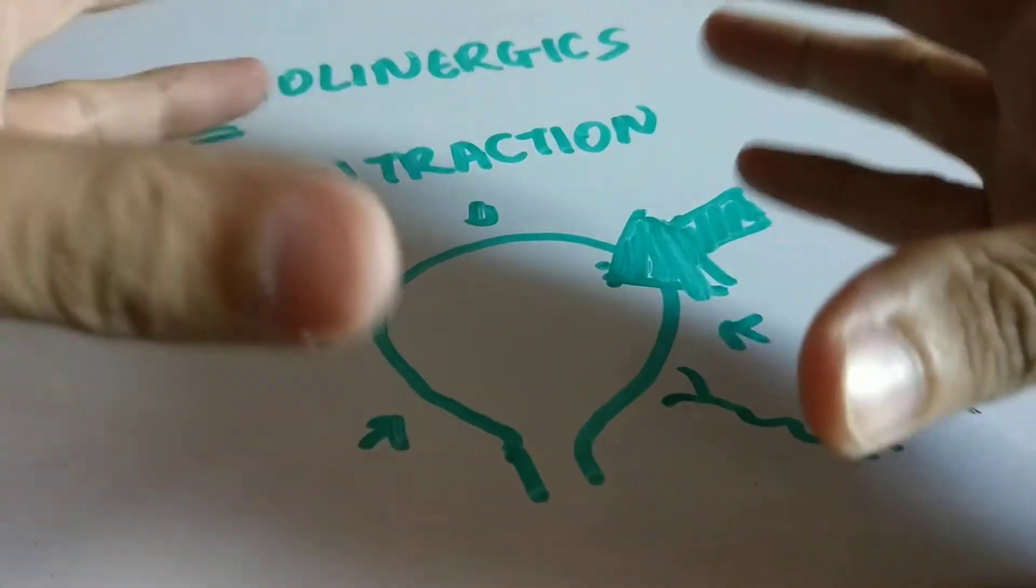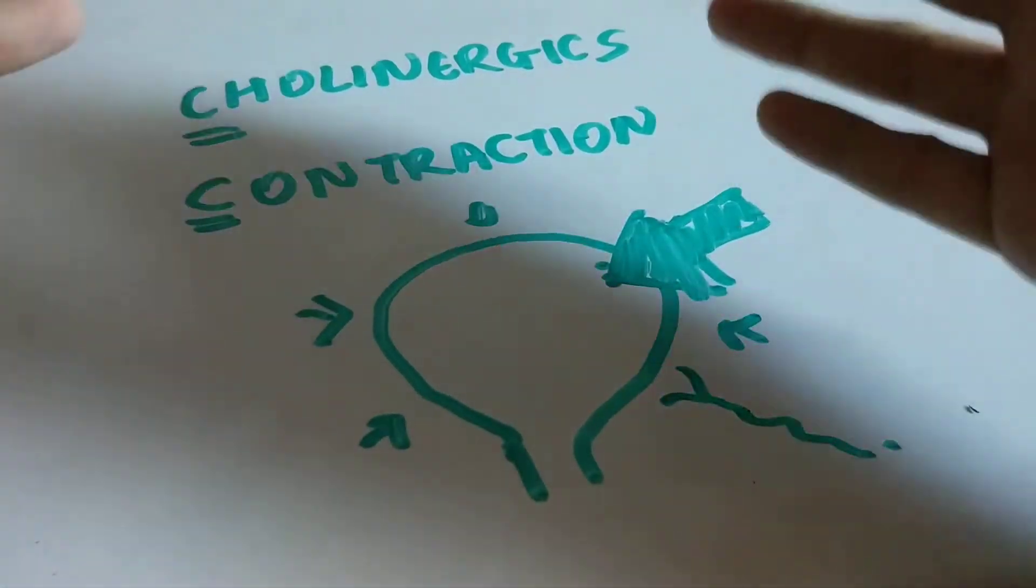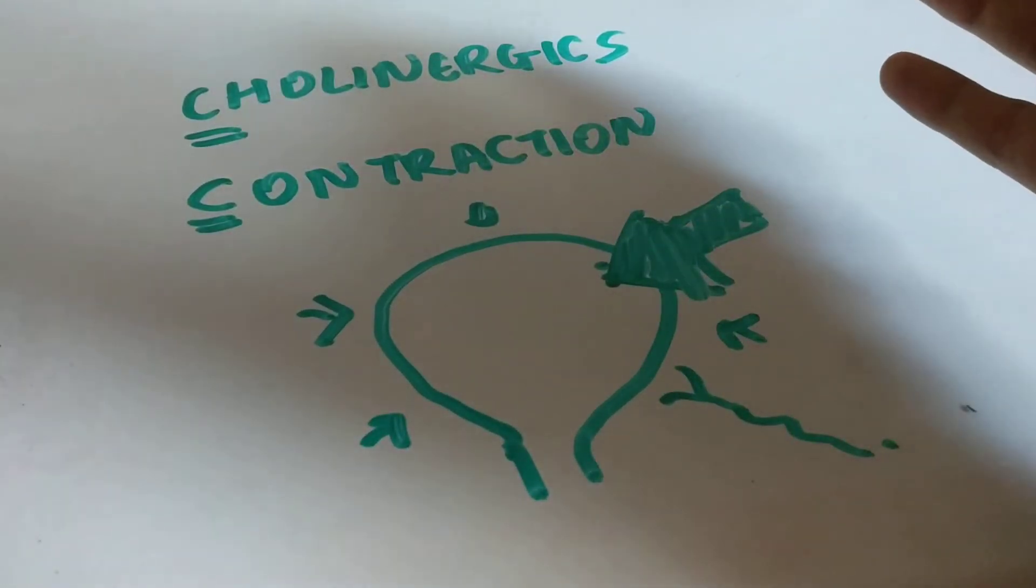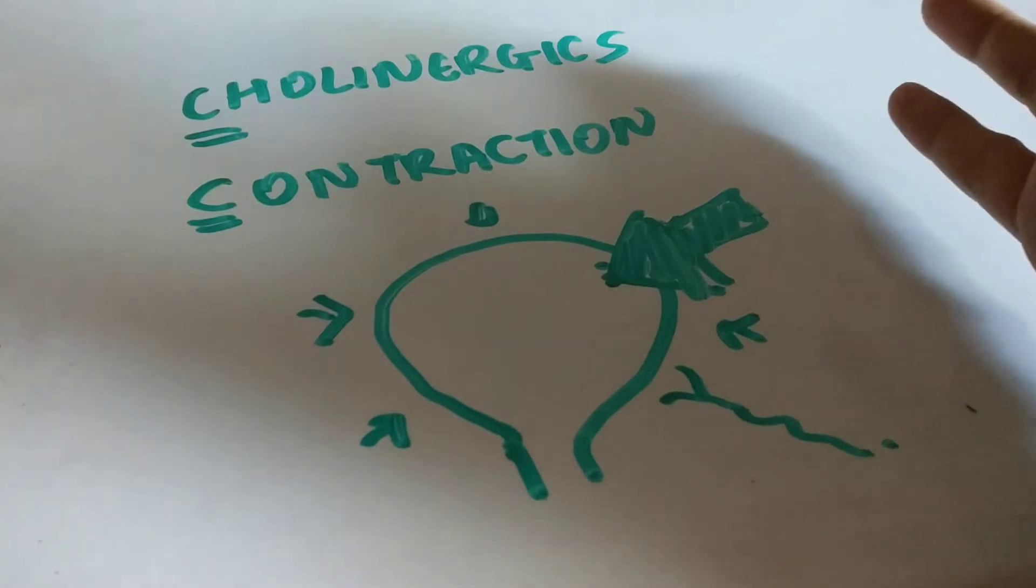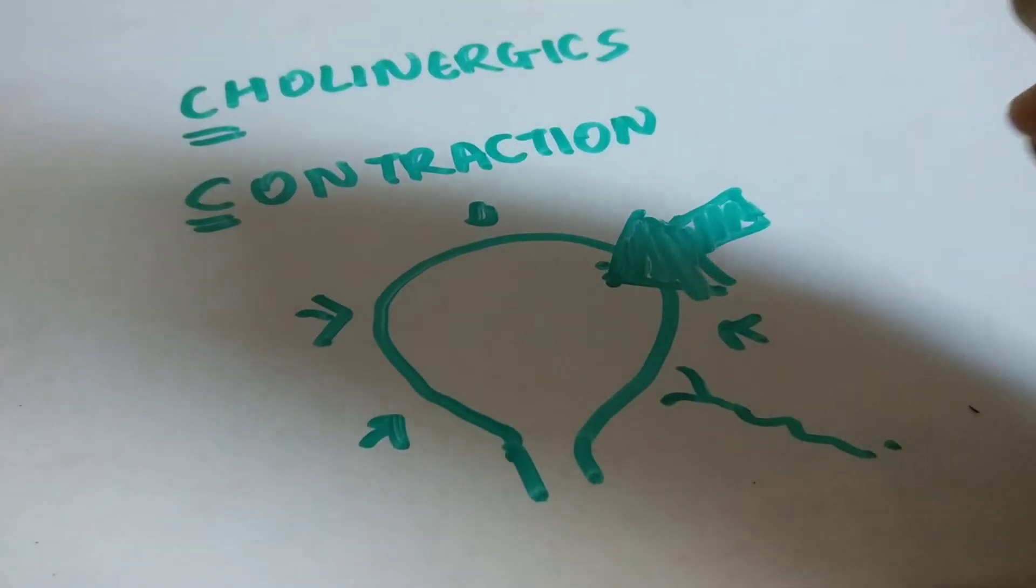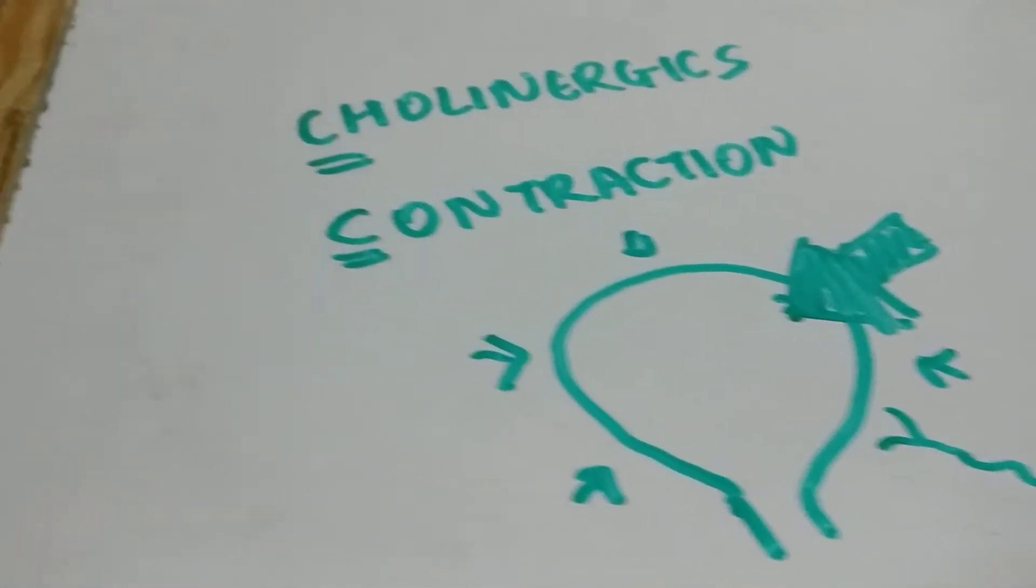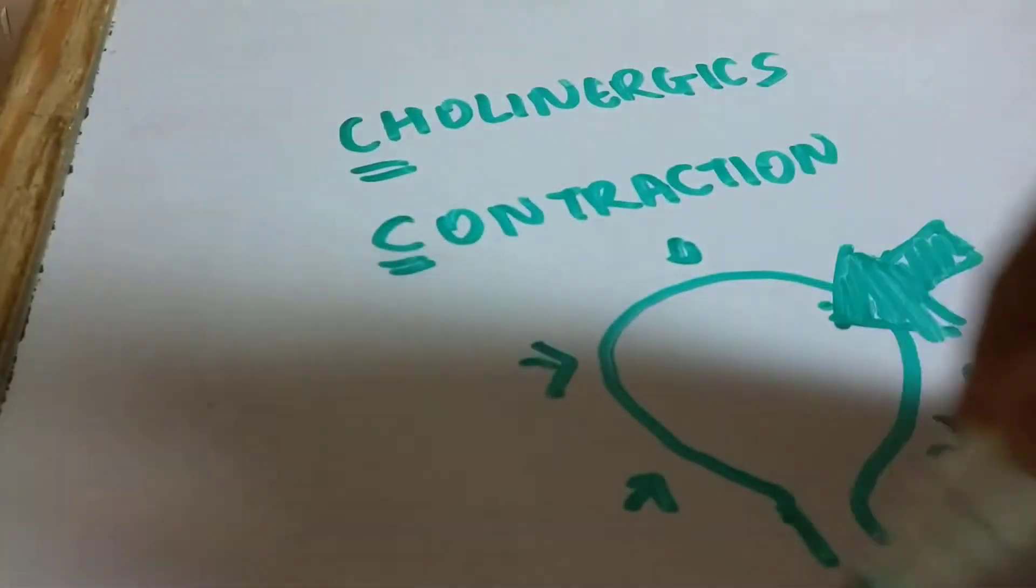So the bladder keeps filling with urine, and when it gets overdistended, it just contracts and there is incontinence. This is known as overflow incontinence and is seen in diabetes mellitus.